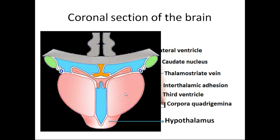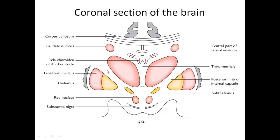In this coronal section where the hypothalamus is removed, you can see the subthalamus underneath. Below that, you can see the midbrain section with the red nucleus and substantia nigra. Lateral to the thalamus is the internal capsule, specifically its posterior limb, and beyond that is the lentiform nucleus.